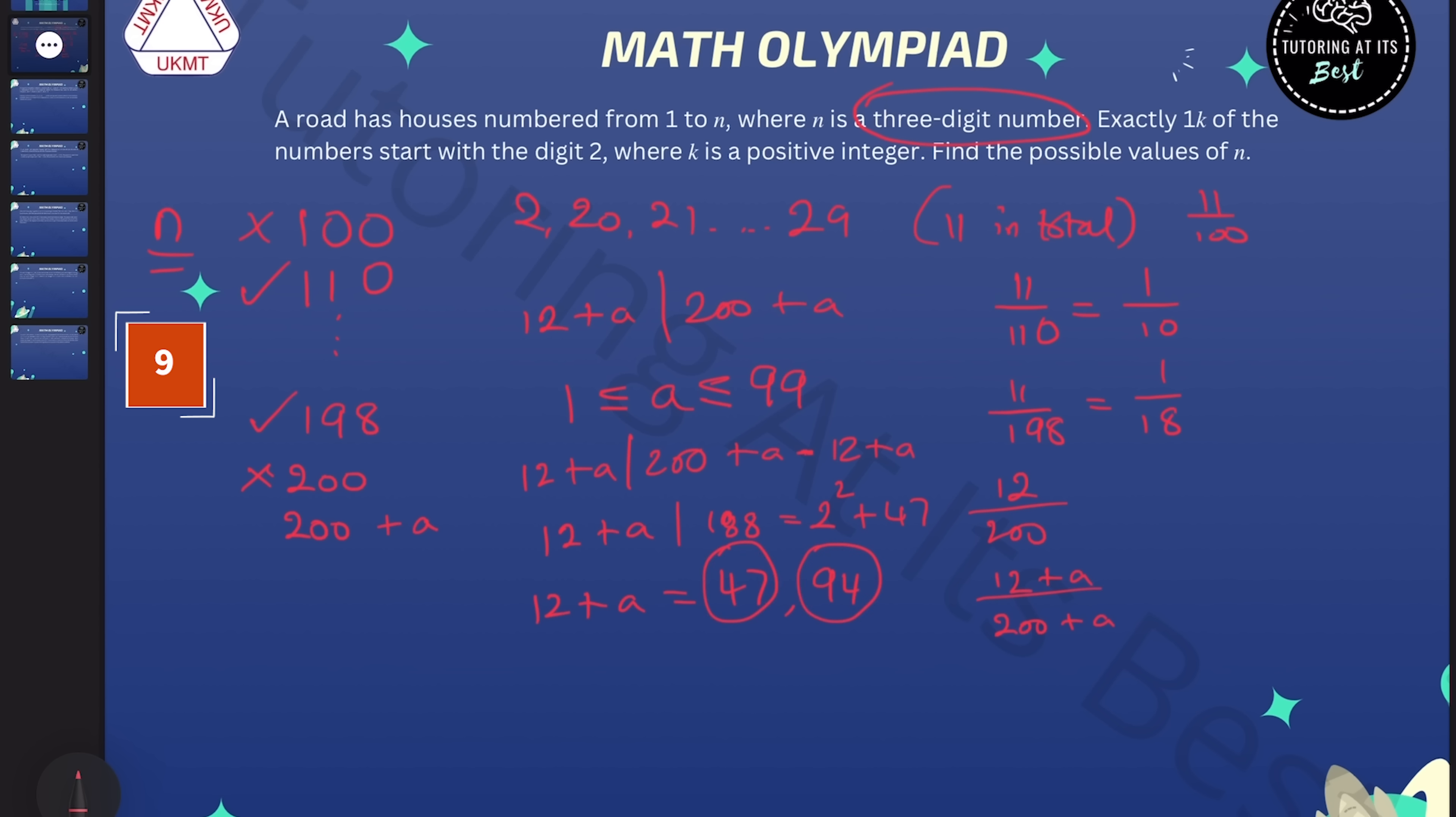And those give us the possible values of a. So now we can return to our table to finish it off. We've now got both of our values for 12 plus a, which is 47 and 94. So let's take a as 47. That means that a equals 35 as we take the 12 over.